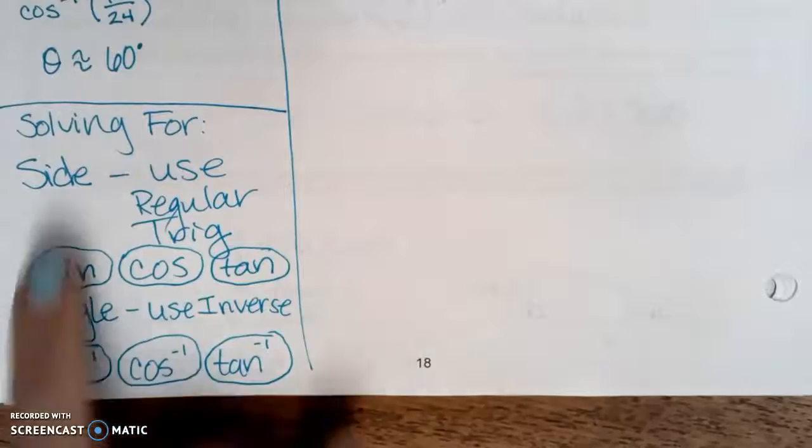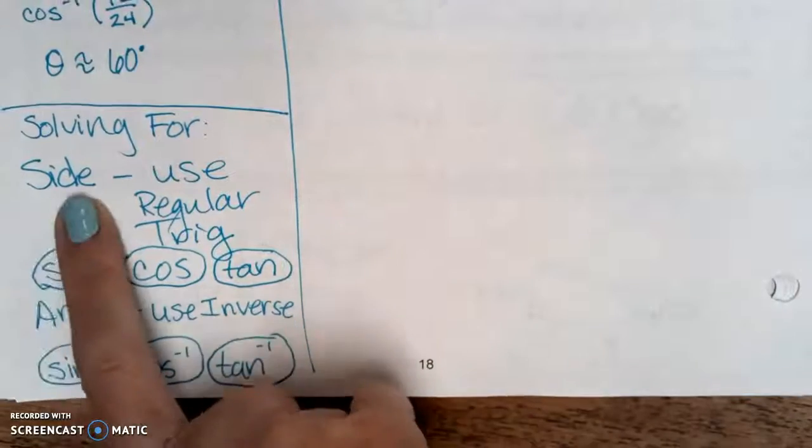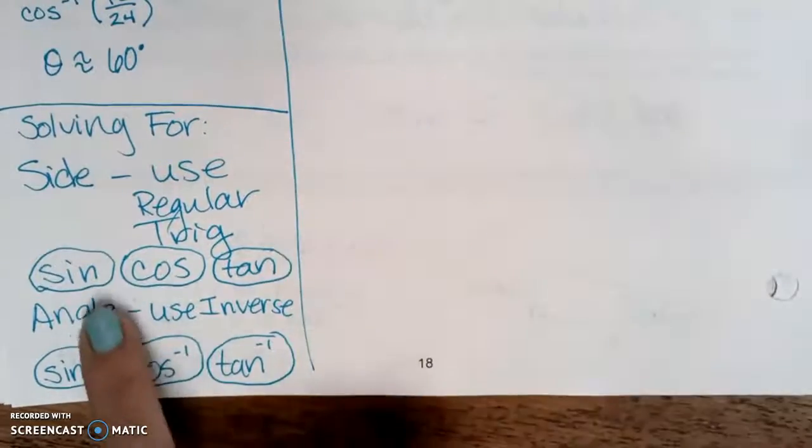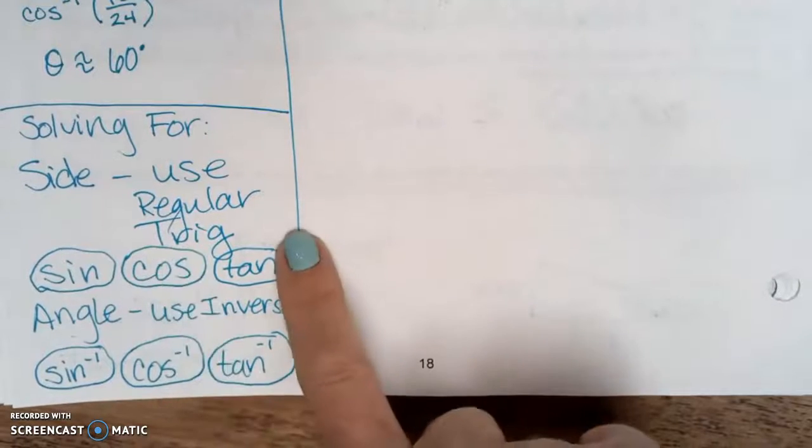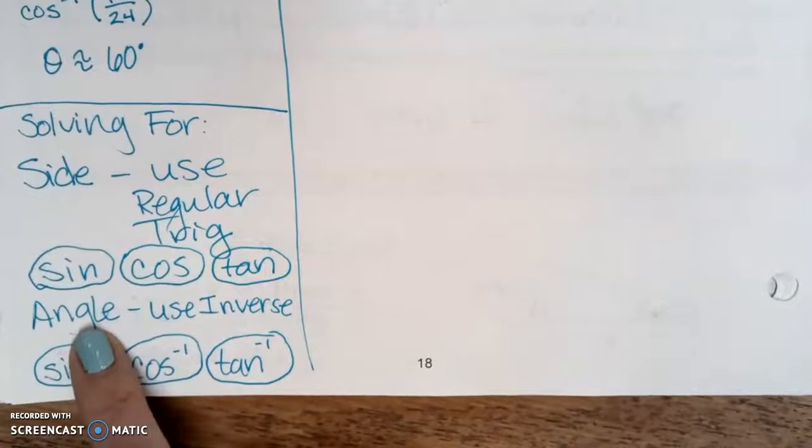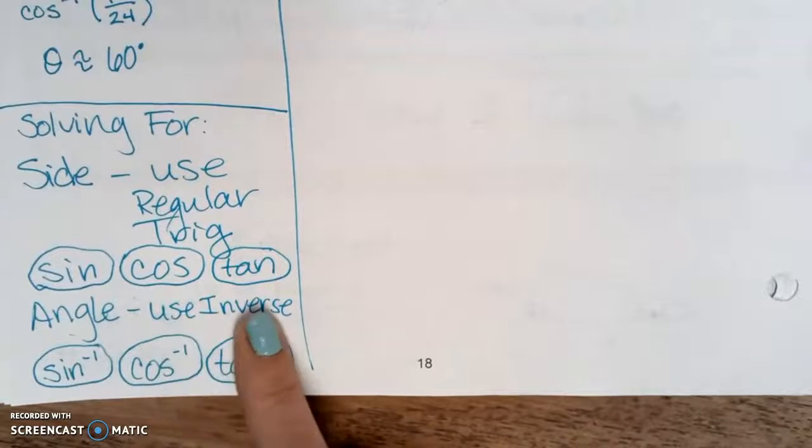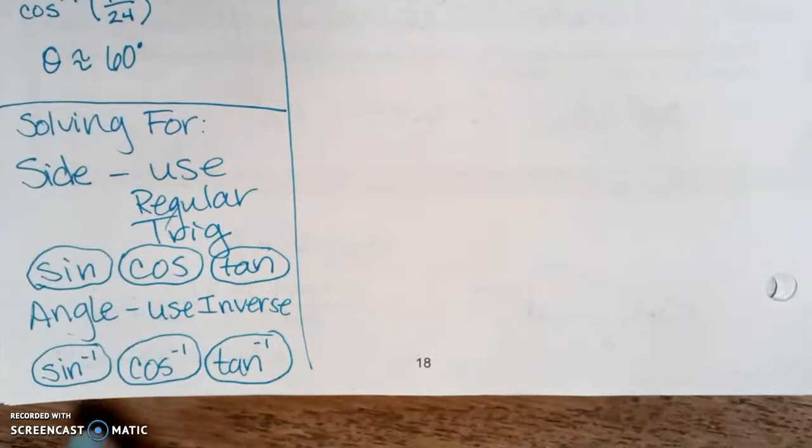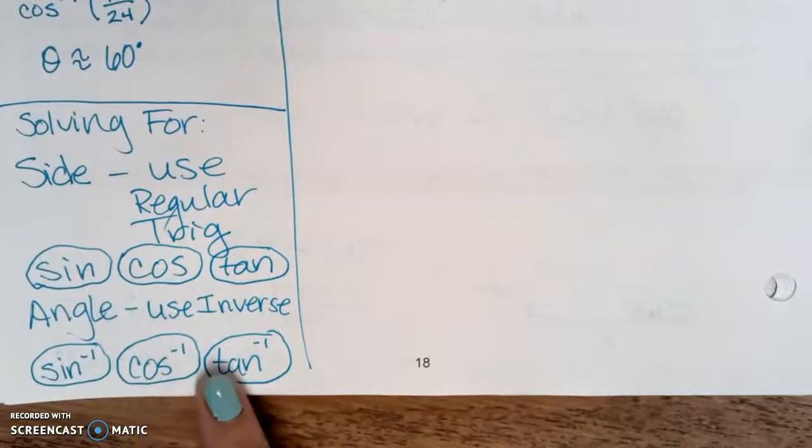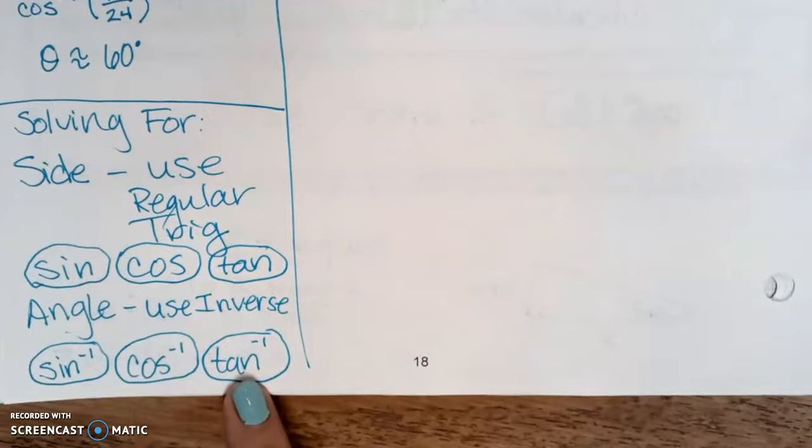Write this part down at the bottom. If you're solving for a side, you're going to use regular trig. So you're either going to use the sine, cosine, or tangent button. But if you're solving for an angle, you're going to use inverse trig. So you're going to write down inverse sine, inverse cosine, or inverse tangent.